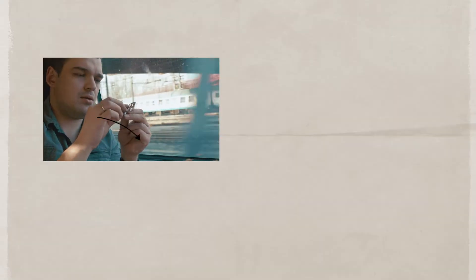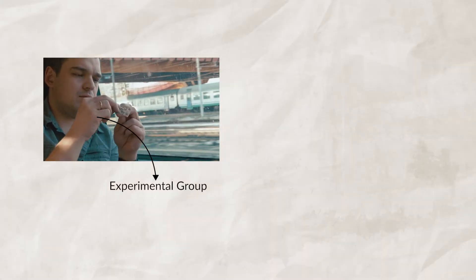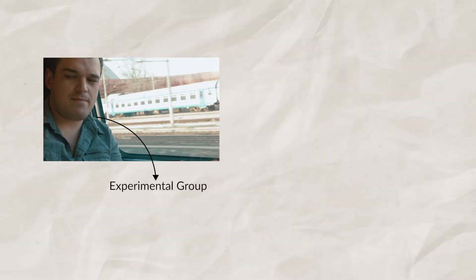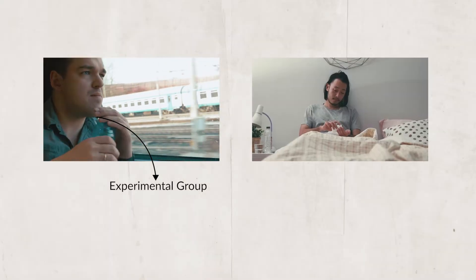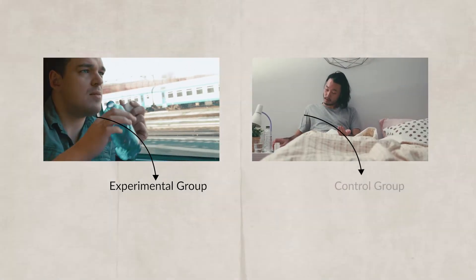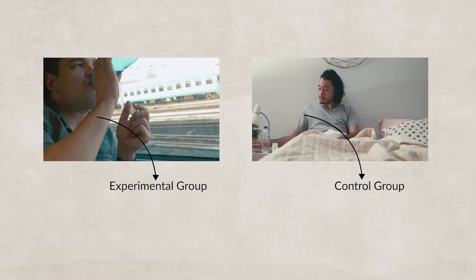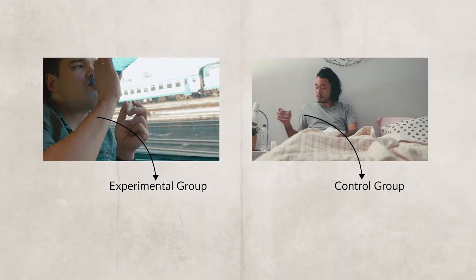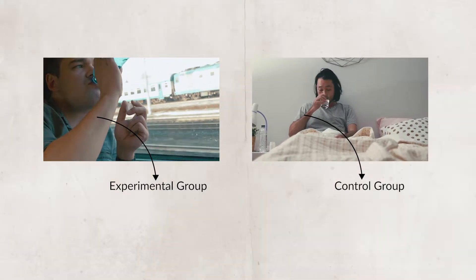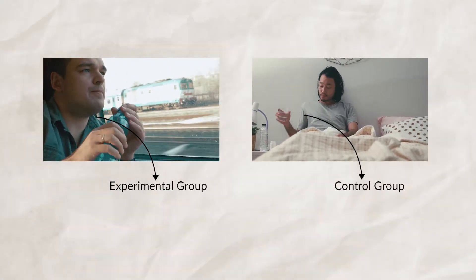These two different groups are known as the experimental group and the control group. The experimental group gets the independent variable — in this case, ibuprofen. The control group is sometimes called the placebo group because they receive the placebo, which for this experiment is a sugar pill that looks like ibuprofen.